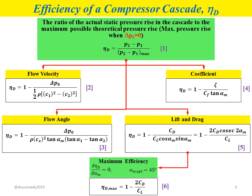Further simplifying Equation 5 after substituting alpha_m optimum equal to 45 degrees, we get Equation 6: mu_d maximum equals one minus 2cd divided by cl. The application of these equations depends on the available data — use Equation 1 for pressure rise data, Equation 2 for flow velocity data, and so on.